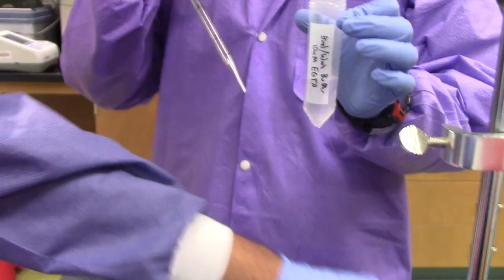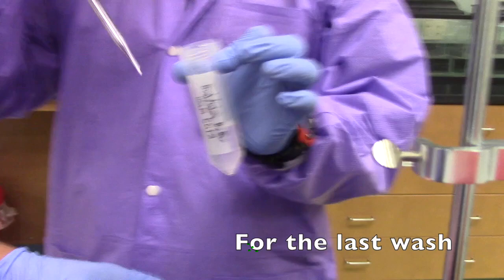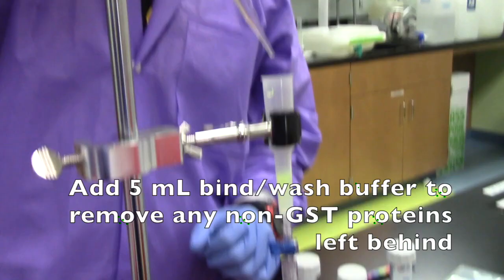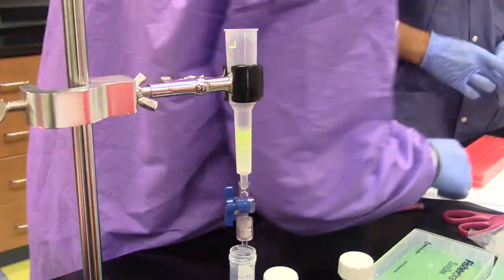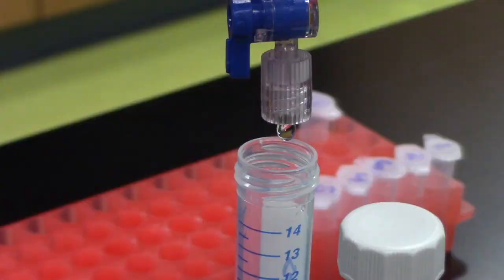For the last wash, add 5 mL bind wash buffer to remove any non-GST proteins left behind. Collect a 10 microliter aliquot from the last wash for fluorescence analysis.